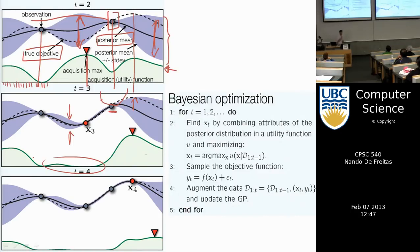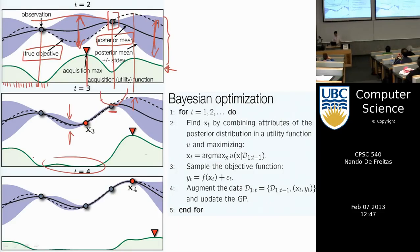In summary, this is Bayesian optimization. It proceeds as follows: we call the green curve the acquisition function u(x | data), and we choose the x that maximizes that acquisition function. The data here would be x1, y1, x2, y2 — the two observed x's and y's.